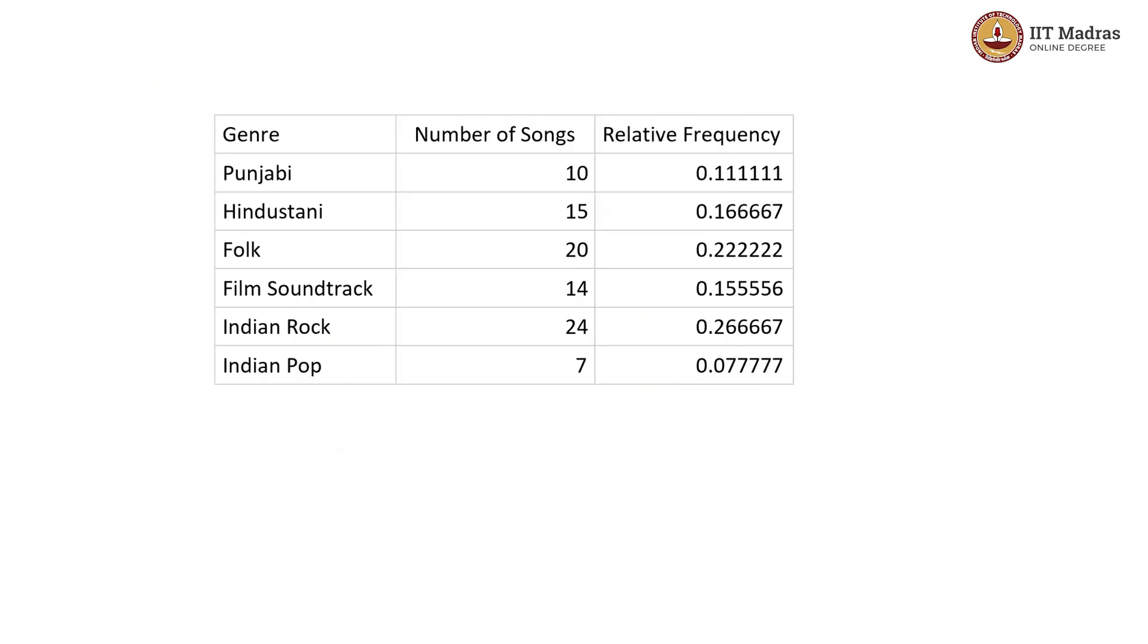And so, this is the final frequency table along with the corresponding relative frequencies. If you add up all these numbers, you will get 10 plus 15 is 25, 25 plus 20 is 45, plus 14 is 59, plus 24 is 83 and plus 7 gives us 90, which is what we expect. And likewise, if you sum the relative frequencies, you will get 1. So thank you.